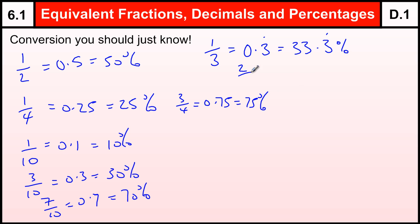And two thirds would be 0.6 recurring, which is 66.6%. So, 0.6 recurring percent. Okay, let's just section that off.